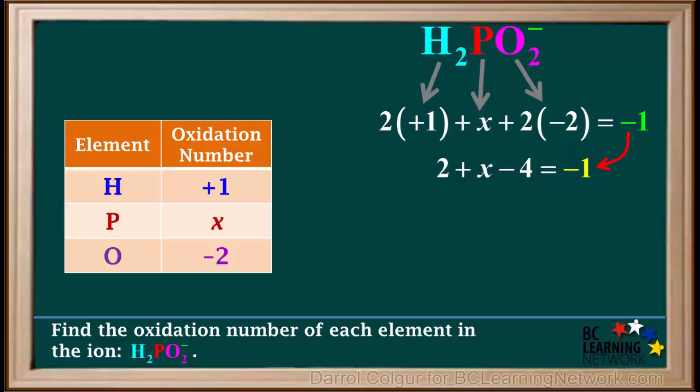And these add up to negative 1. Positive 2 and negative 4 add up to negative 2. So, we can say that x minus 2 is equal to negative 1. Adding 2 to both sides of the equation gives us x equals negative 1 plus 2, which is equal to positive 1.